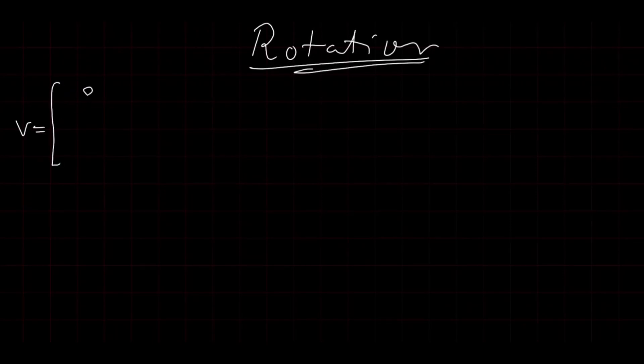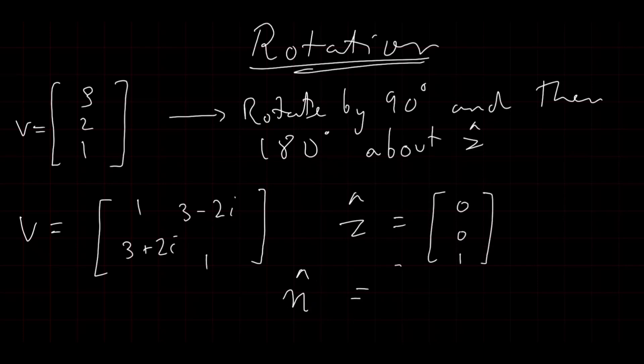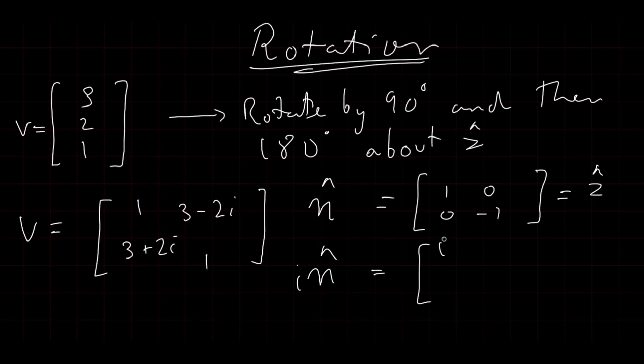Let's assume we want to rotate a vector v [1,2,3] by first 90 degrees and then by 180 degrees along the z-axis. First we convert the vector v into a Hermitian matrix and we get this, and our axis of rotation is the z-axis or in its vector representation [0,0,1]. Representing it as a vector now as a Hermitian matrix, we get n hat but we want the plane of that so we get i times n hat will be the plane.